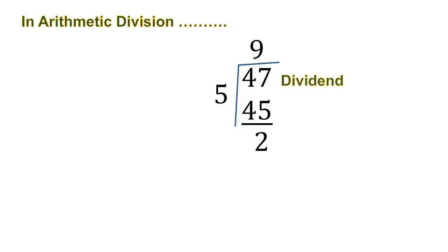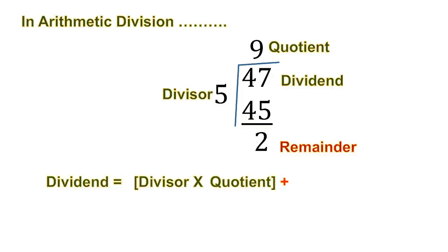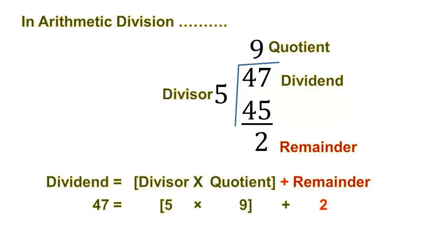Here, 47 is divided by 5. 47 is the Dividend, 5 is the Divisor, 9 is the Quotient, and 2 is the Remainder. Dividend equals Divisor into Quotient plus Remainder. So, 47 equals 5 into 9 plus 2.